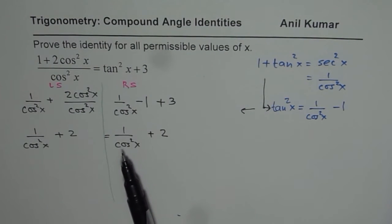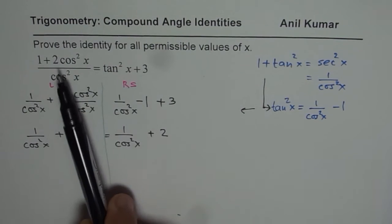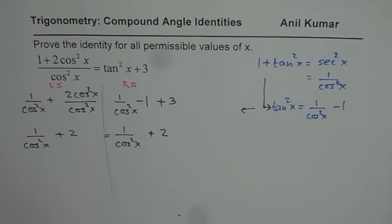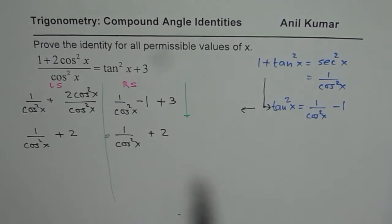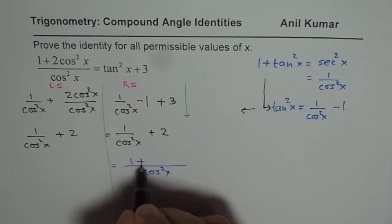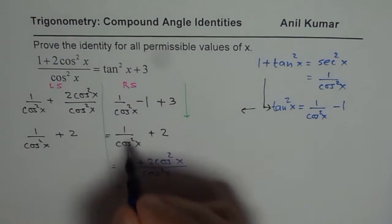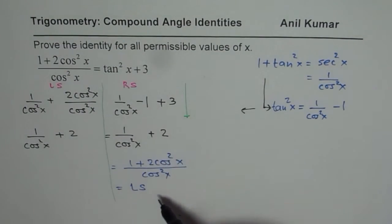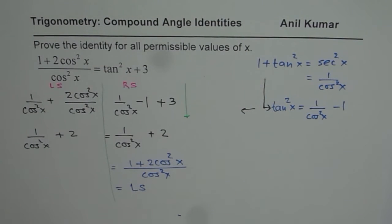If you want to go from one side to the other, you can start from the right side. At this stage, take a common denominator of cos²x to get (1 + 2cos²x)/cos²x, which is exactly the left side. So you start from one side and land on the other — that is even better.